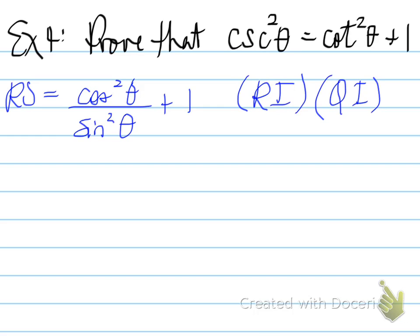Now, looking at the right side, you will see that you have cos squared theta over sine squared theta, and then you have a plus one. So automatically you should be thinking that we need a common denominator. And you get sine squared on the bottom and cos squared theta plus sine squared theta on the top.